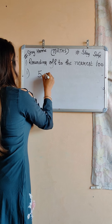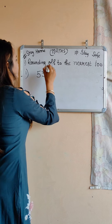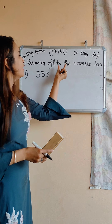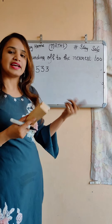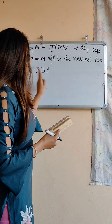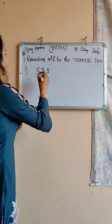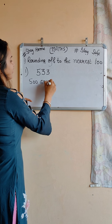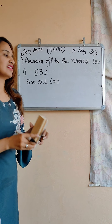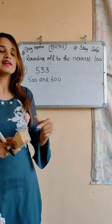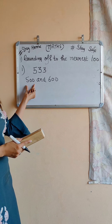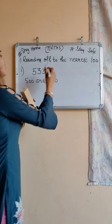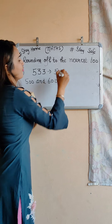We have our number 533. We have to calculate rounding off this given number 533 to the nearest 100. First we will check between which two 100s this number lies. 533 lies between 500 and 600, but it is more closer to 500, so our answer is 500.